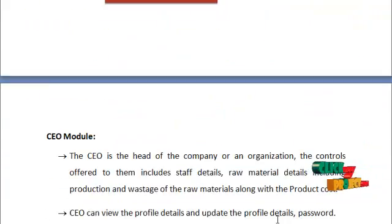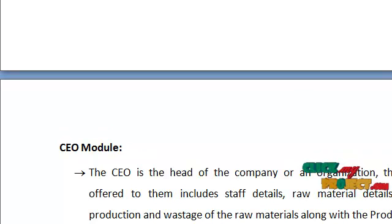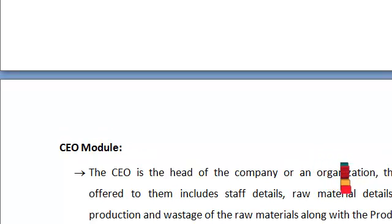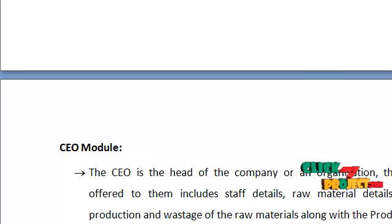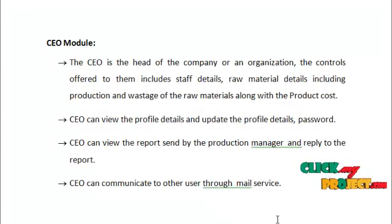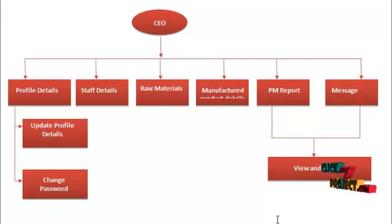The next module would be the CEO module. The CEO is the head of the company or organization. The controls offered include staff details, raw materials including production and wastage of raw materials along with the product cost. The CEO can view and update their profile details and password, view reports sent by the production manager and reply to them, and communicate to other users through mail services. The data flow diagram for the CEO is shown below.